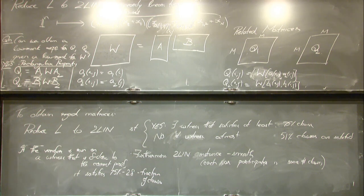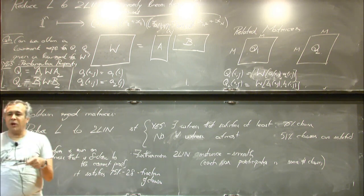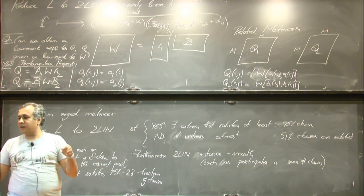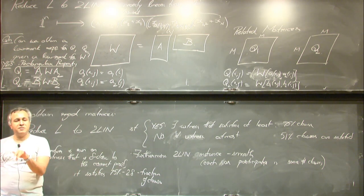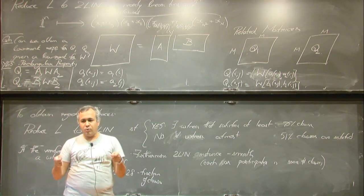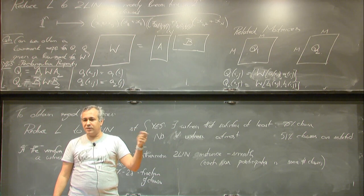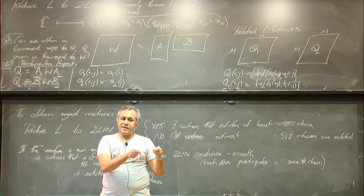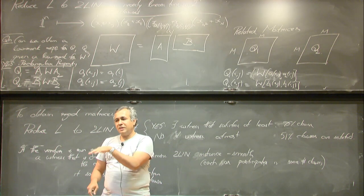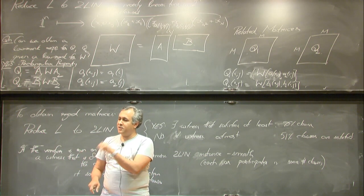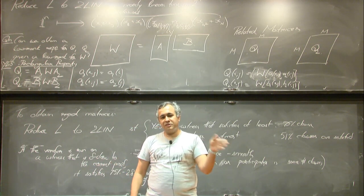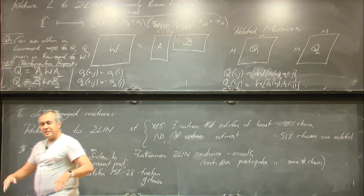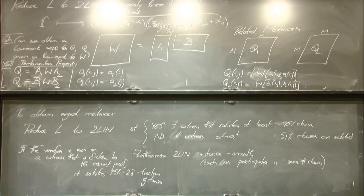On the question of whether algebraic PCPs are needed: the BLR PCP has the rectangular property because you pick X and Y, and the first n/2 bits of each form one part of the randomness, the second n/2 bits form the other. Reed-Muller-based PCPs also have this property. Plugging this into the Alman-Chen framework yields the final result on explicit rigid matrices.